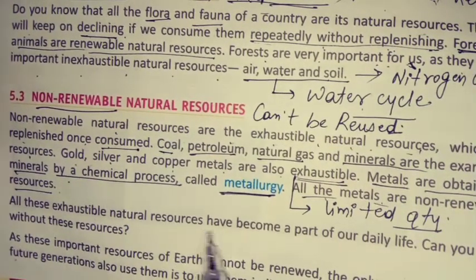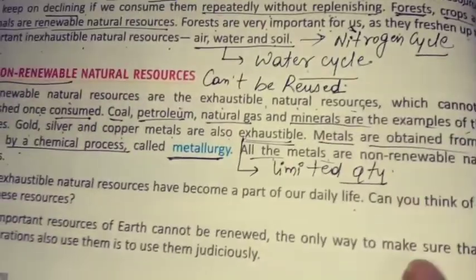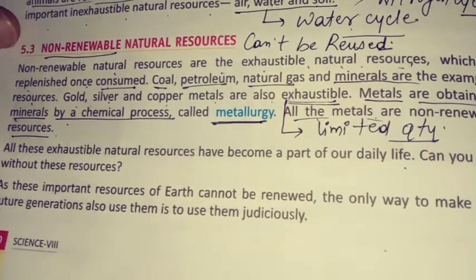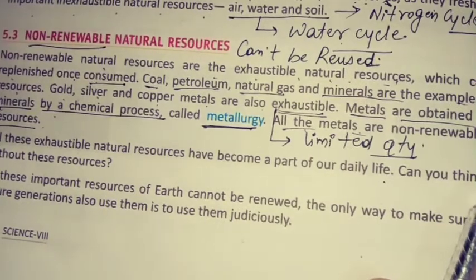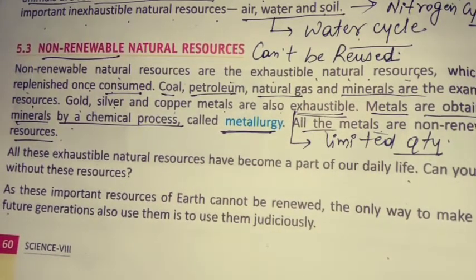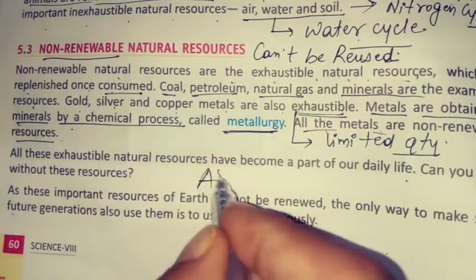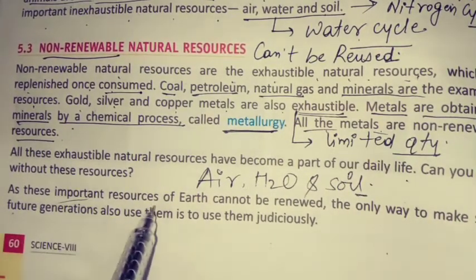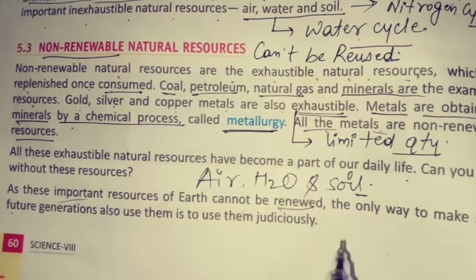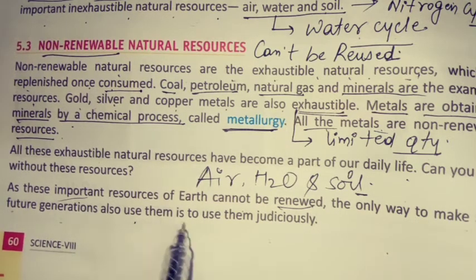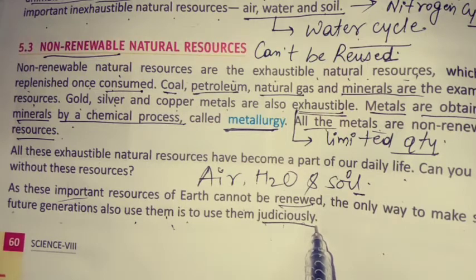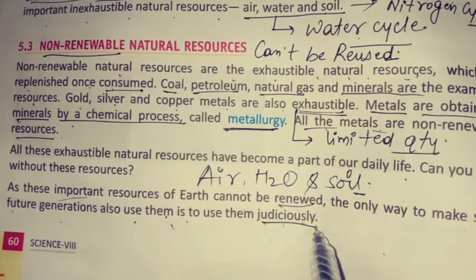All these exhaustible natural resources have become a part of our life. Today we use plastic, wood, natural and synthetic fibers, iron, gold, silver, and steel in our daily life. Can you think of a life without these resources? Without them, life would not be possible. The only way to make sure future generations can also use them is to use them judiciously — we have to make proper use of them.